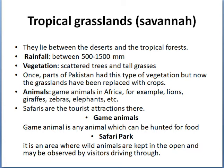Game animals are any animals which can be hunted for food. Safari parks — we also have some in Pakistan — are areas where animals are kept in the open and may be observed by visitors driving through. Visitors are allowed to visit the park in their cars and can spectate the animals roaming around them.